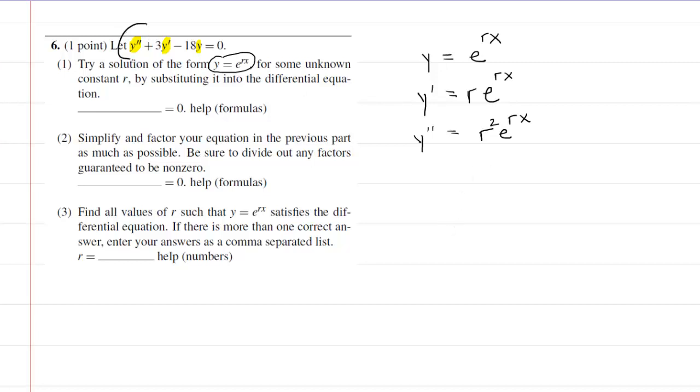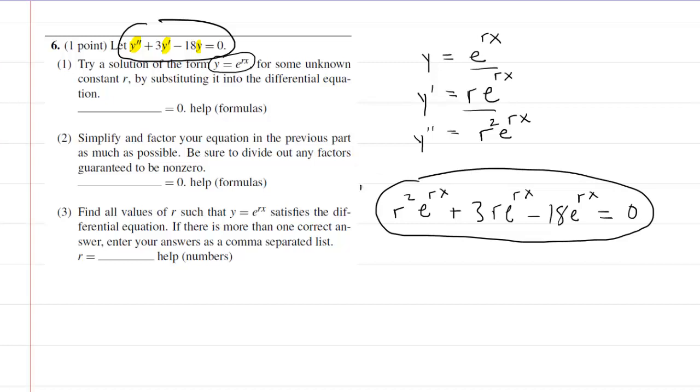We're going to substitute them into this differential equation. So for y double prime, we'll have r squared e to the rx plus 3 times y prime. And y prime was given right here as r e to the rx. And then minus 18 times y. And y was e to the rx. And this will be set equal to zero. And so for this first blank where it says try a solution of the form by substituting it into the differential equation, this would be the correct answer right here. We've substituted in the y, y prime, and y double prime.